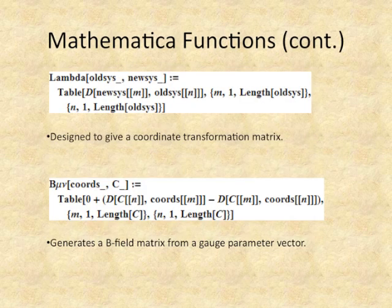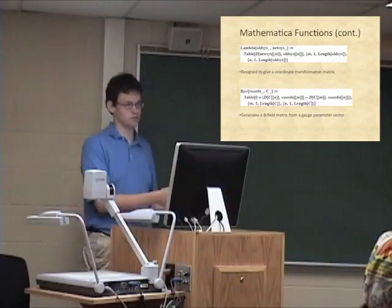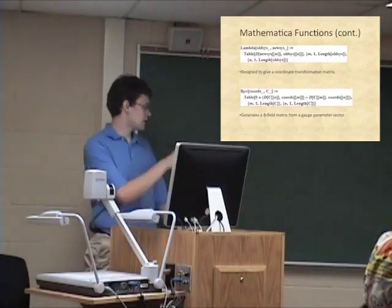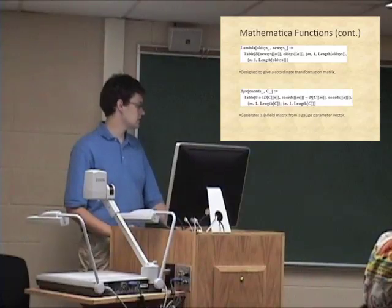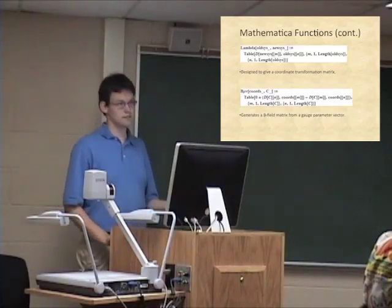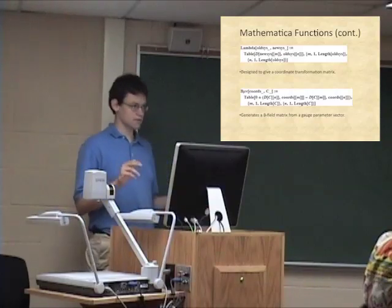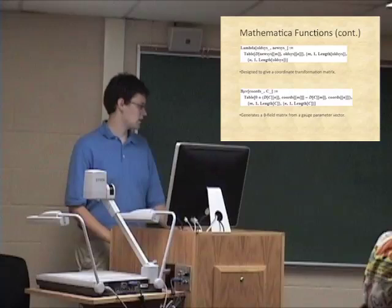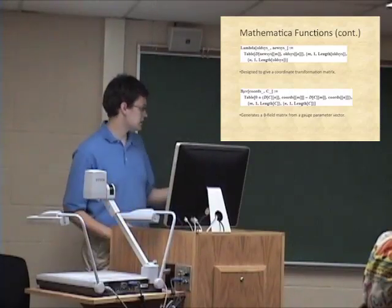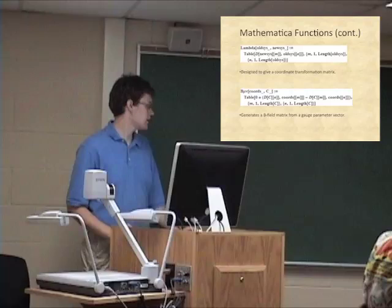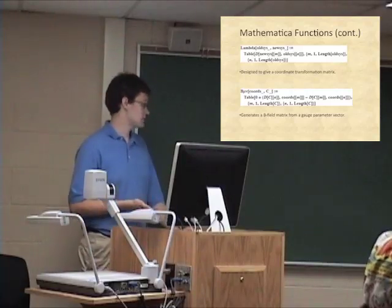These aren't Buscher rules, but they're extra functions I found helpful to make. The first one, called lambda, gives a coordinate transformation matrix — that's just a matrix that allows you to switch between two different coordinate systems, such as from Cartesian to spherical. And the one labeled B-mu-nu generates a B field matrix from a gauge parameter vector, which I'll explain later. You put in the gauge parameter, usually labeled C, and it gives you a generalized B field.